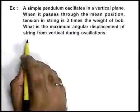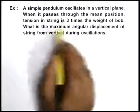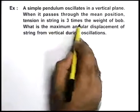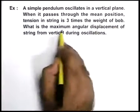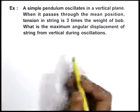In this example, we are given that a simple pendulum oscillates in a vertical plane. When it passes through the mean position, tension in string is three times the weight of the bob. We are required to find what is the maximum angular displacement of string from vertical during oscillation.